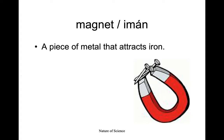Next, we'll talk about some miscellaneous tools you'll probably use during labs. The first is a magnet. A magnet is a piece of metal that attracts iron. Some metals are not magnetic and are not attracted to a magnet — this can help us identify what type of metal an object is made of.